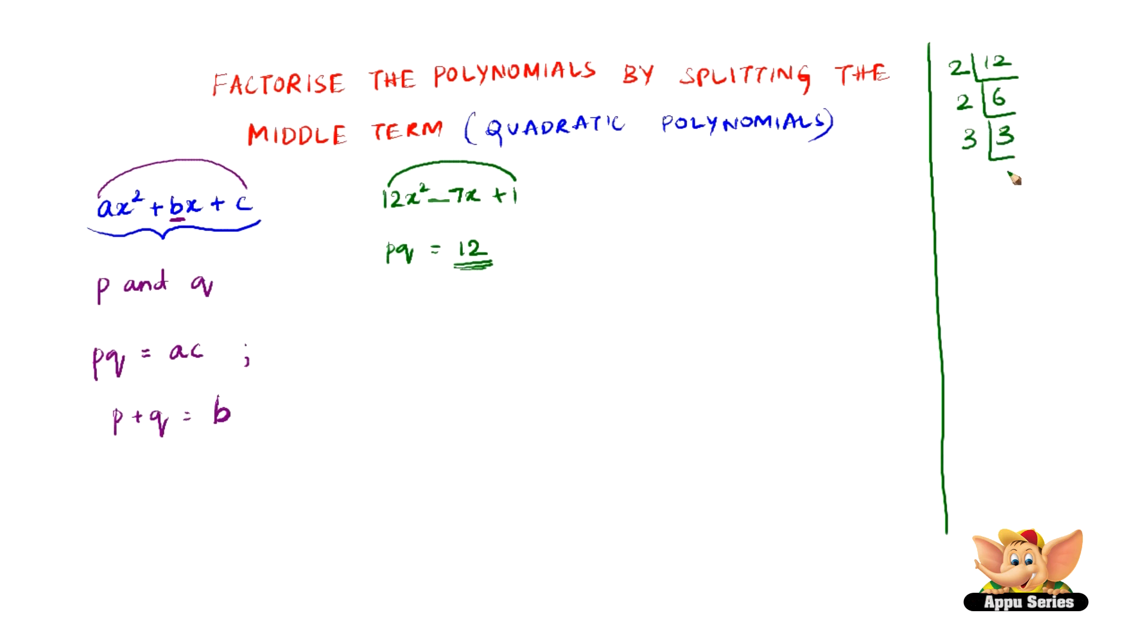2 times 3 is 6, and 3 times 1 is 3. So 2, 2, 2, 3 are the factors of 12. But we have to arrange them in such a way that p into q gives us 12. So 2 into 2 gives us 4, and 3, now 4 into 3 gives us 12.